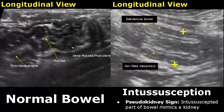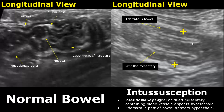A pseudokidney sign is another feature of intussusception. You will see that the intussusceptive part of the bowel will look like a kidney in the longitudinal view. The hyperechoic areas are fat-filled mesentery, and the outer hypoechoic layer is the edematous part of the bowel.